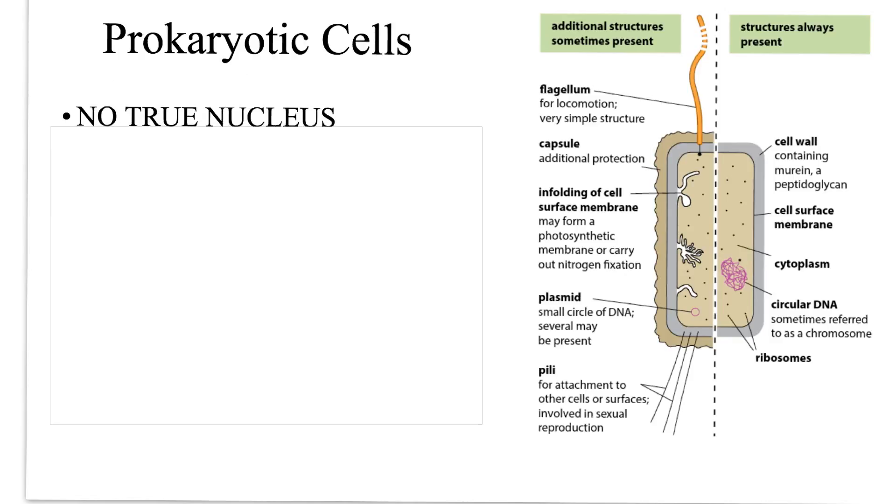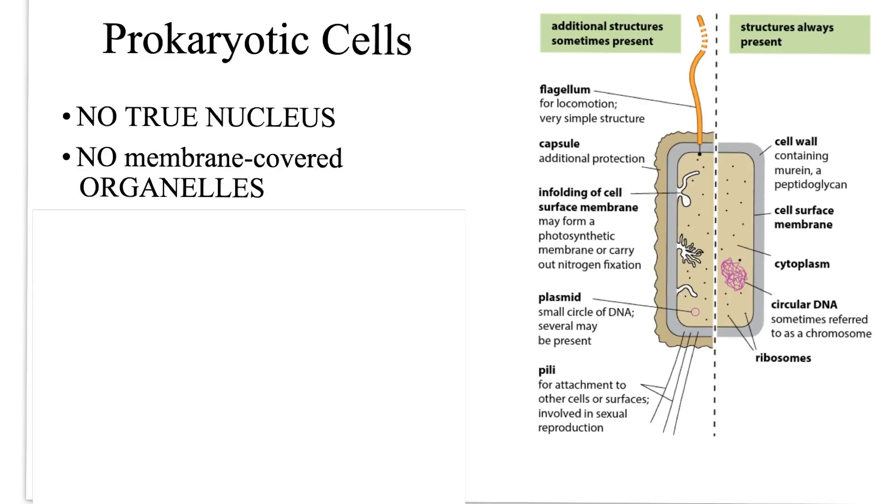Prokaryotic cells do not have any nucleus. Secondly, prokaryotic cells do not have membrane-covered organelles. The main DNA, which is in circular form, is not enclosed within a nucleus in prokaryotic cells, and there is no compartmentalization in prokaryotic cells.